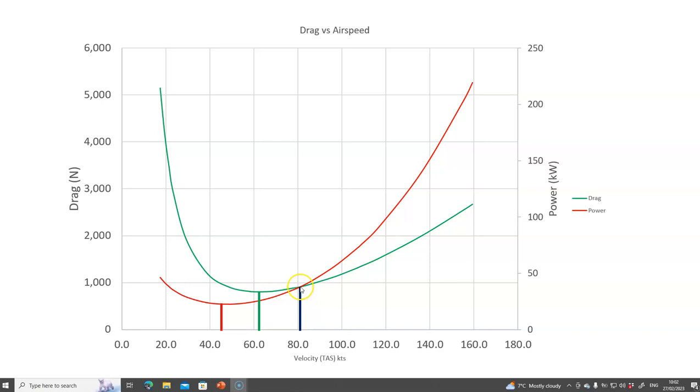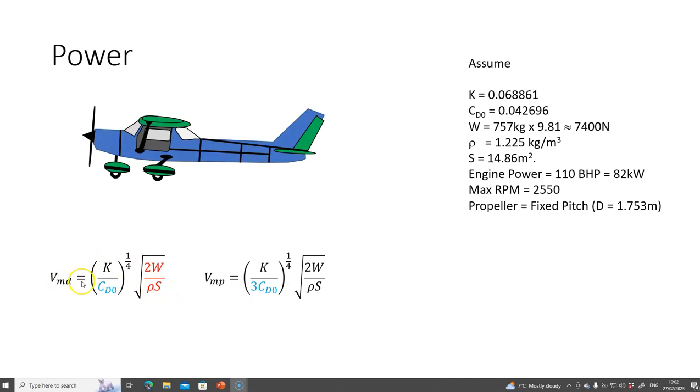We saw that velocity of minimum drag was K over CD0 to the power of a quarter times this expression. Velocity of minimum power is K over 3 CD0 to the quarter of the square root of 2W over rho S. There is another velocity, and that's the velocity of maximum range, and for a propeller aircraft,